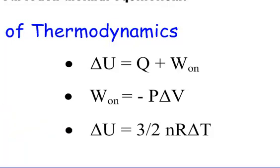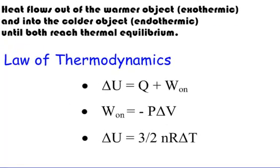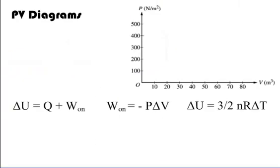With these three equations, the second and third equations define both the work and the internal energy, which means you'll use those and then use the first equation to solve for Q, the heat. We're going to be doing a bunch of what we call PV diagrams — pressure and volume diagrams — where pressure is on the y-axis and volume is on the x-axis.